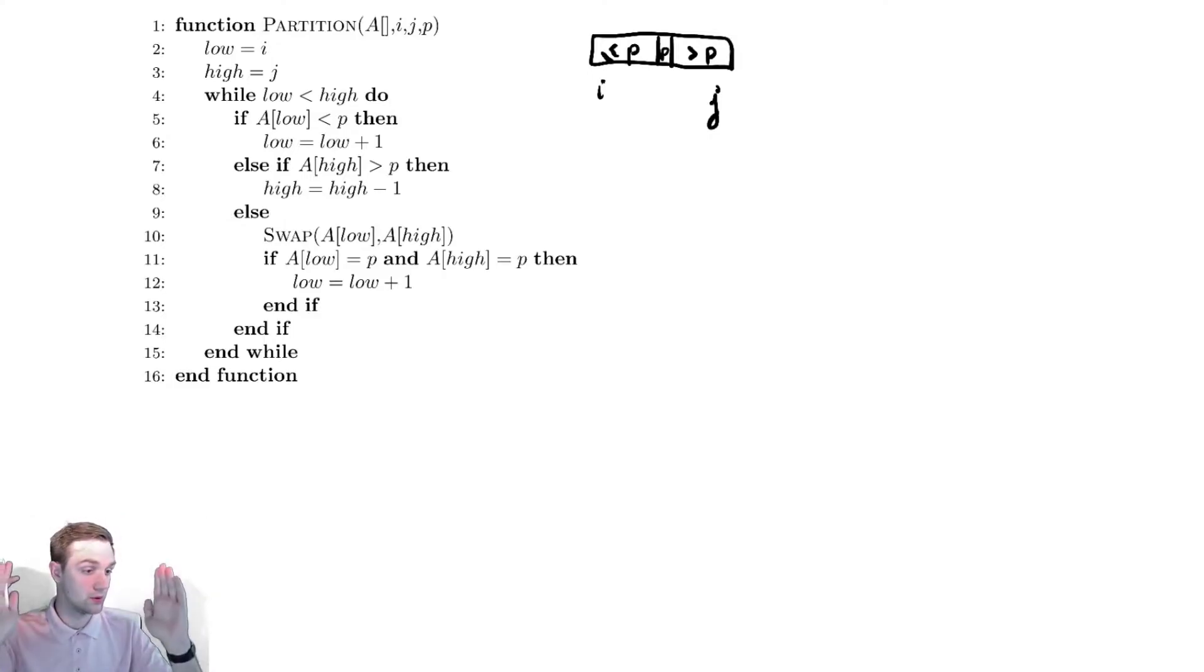We do this by iterating through the array kind of twice at once. We're going to have an array with a counter on the left for low and a counter on the right for high.